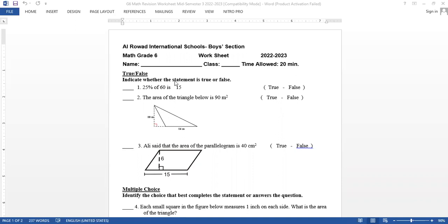I start with question number one: 25% of 60 is 15. I want to know if this is true or false. He asked me 25% of 60. So as you can see here, we have the percent and we have the total or the whole, which is 60. So he asked me if the part is 15 or no.